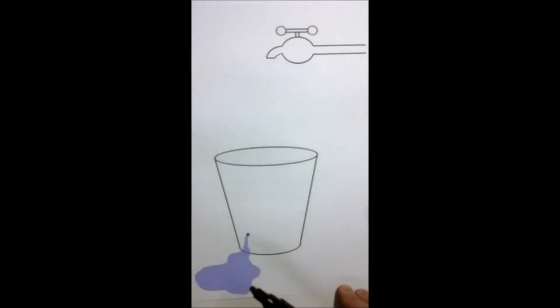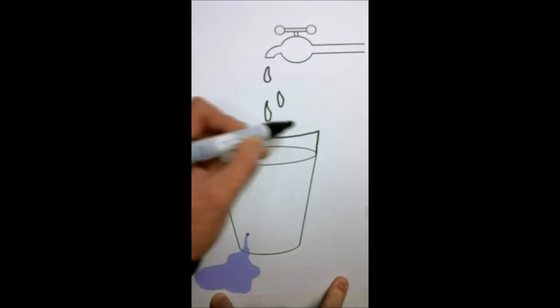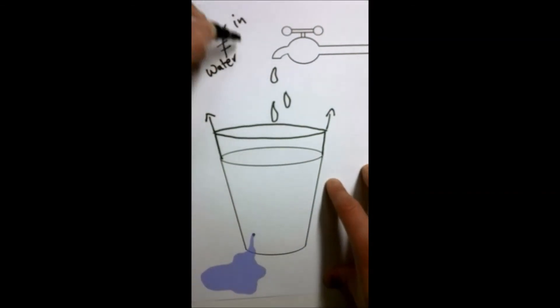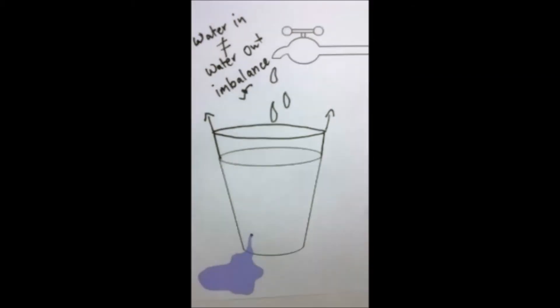However if you have the situation where no matter how fast the water is dripping, you keep on increasing the size of the bucket, the bucket can never fill. So ultimately more water is coming in than can leave the bucket. This is an imbalance.